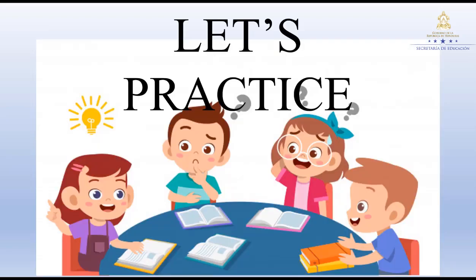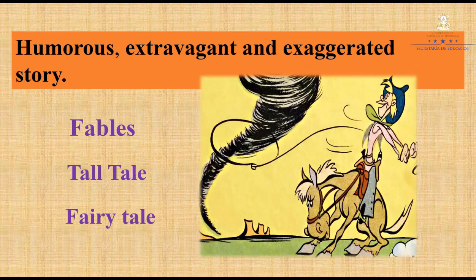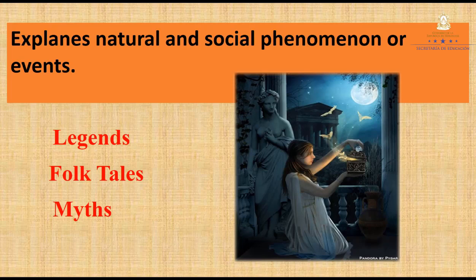Now, let's practice. Let's read the sentences and identify what kind of story each one is. Short story with a moral point — fables, myths, legends. Excellent, fables. Humorous, extravagant, and exaggerated story. Very good, tall tale. Explains natural and social phenomena or events. Myth. Very good.